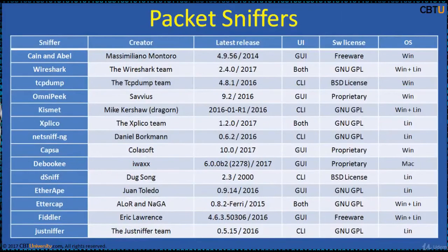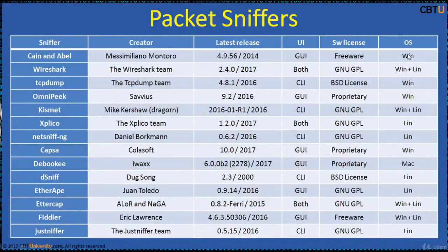These are popular packet sniffers: Cain and Abel, Wireshark, TCPdump, Kismet, Explico, and others. The table includes the creator name, latest release, user interface, software license, and the operating system each tool supports.